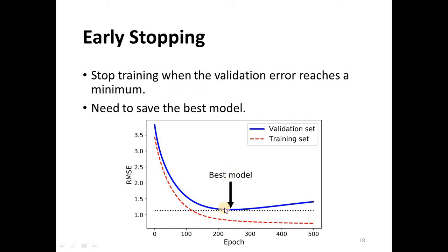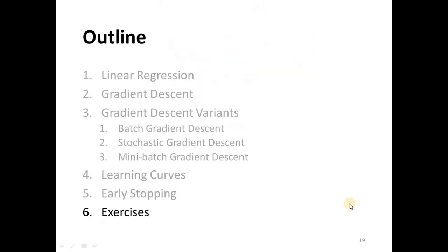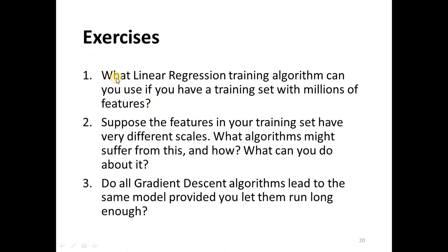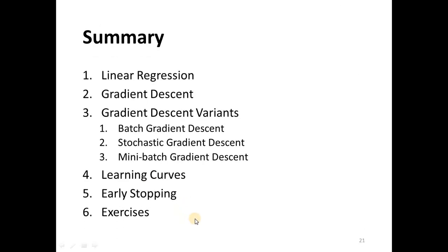In order to find this best model, we need to keep training and checking the accuracy, and after some time, if there is no improvement, we stop training. We should save the parameters of the best model, because we usually need to use the model parameters from that best point. This is the end of the chapter — I suggest that you solve the three exercises provided.